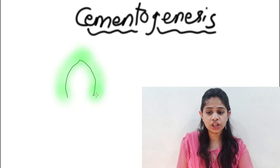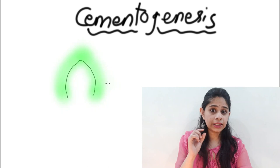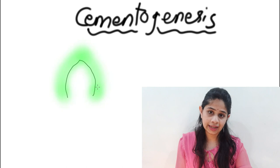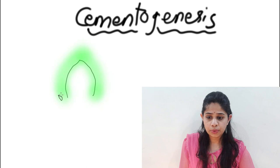Reduced enamel epithelium, as the term suggests, is an epithelial component formed to protect the underlying enamel. If we closely observe the basal parts — the area where the inner and outer enamel epithelium meet — it forms a loop termed the cervical loop.